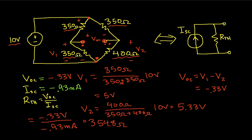So, there we have it. And the Norton equivalent circuit here is going to be a current source with negative 0.93 milliamps, and a Thevenin equivalent resistance of 354.8 ohms.